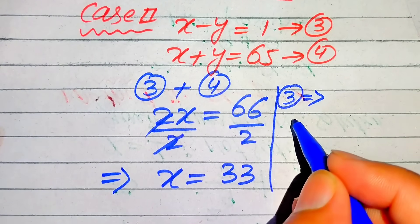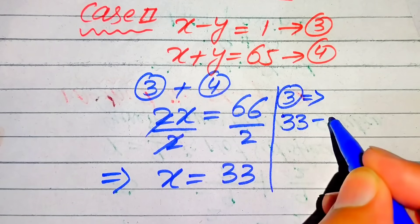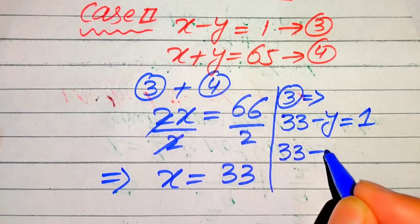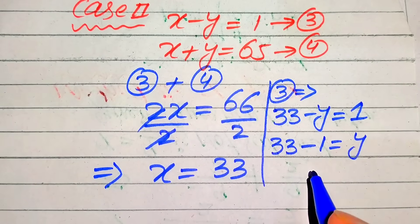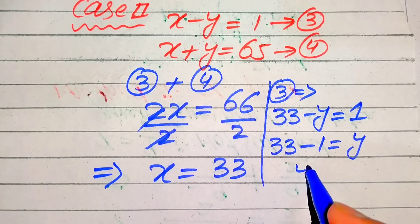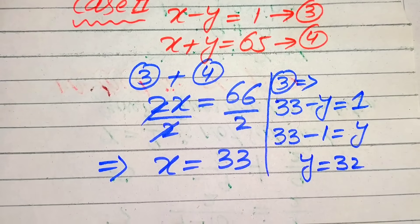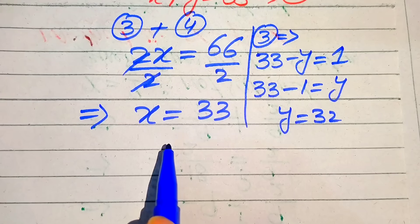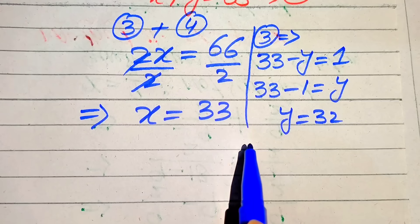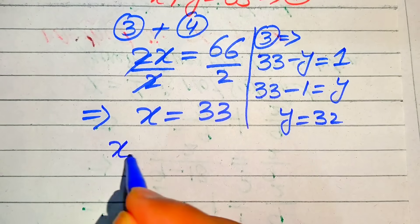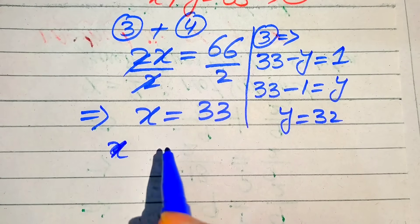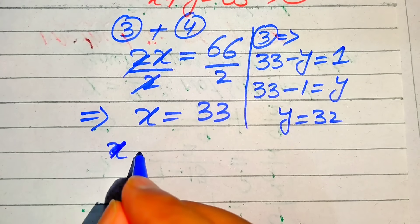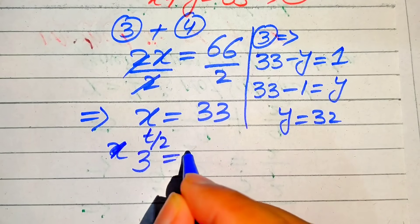From equation 3: 33 minus y equals 1. Moving terms, we get y equals 33 minus 1, so y equals 32. Since we are solving for integer values of t, the values x equals 33 and y equals 32 do not yield integer results directly, so we apply logarithms.